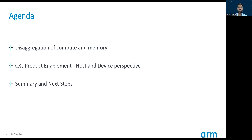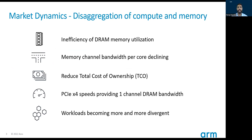Let's move to the main reasons for disaggregation of compute and memory and how we look at it from a market dynamics point of view. The first reason is inefficiency of DRAM memory utilization — we'll show in upcoming slides how much DRAM is really stranded at each of the cloud service providers. The second reason is memory channel bandwidth per core decline. As seen recently in announcements from Ampere, NVIDIA, etc., they're going to release products with more than 128 ARM cores, and many hyperscalers would like at least 4 gigabytes per core. Upcoming designs are even thinking of increasing beyond 8 memory channels to support these requirements.